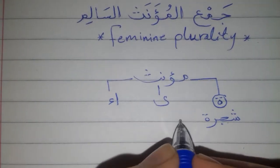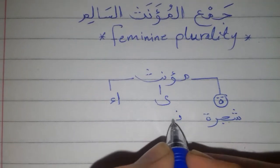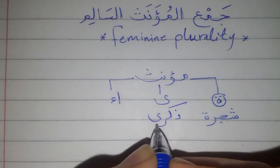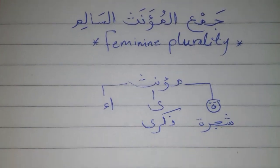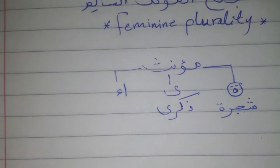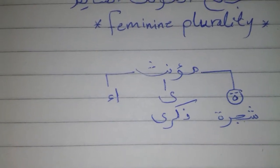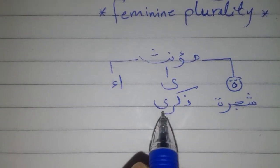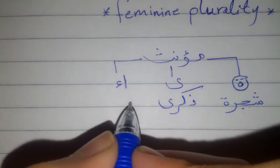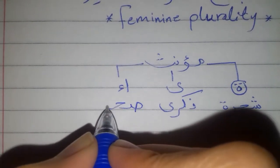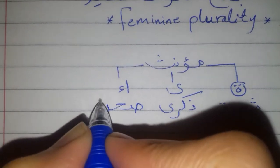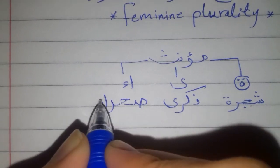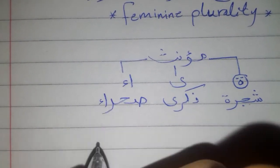Here, zikra — this word is mu'annas or feminine because it ends with alif maqsura. And sahara — this word is mu'annas because it ends with alif hamza.